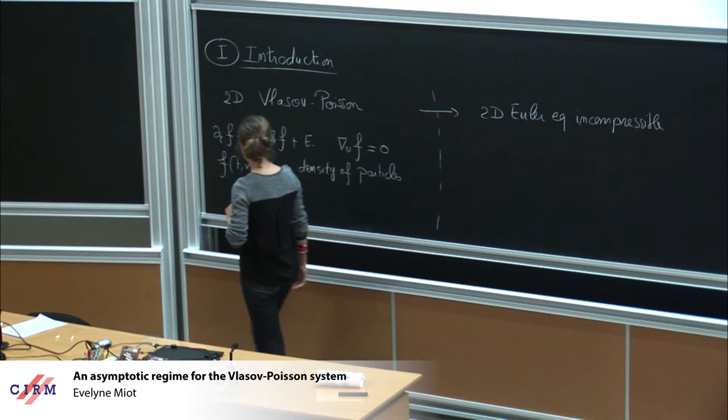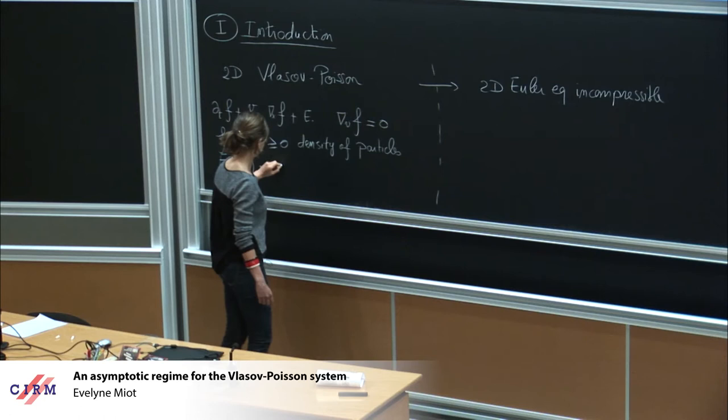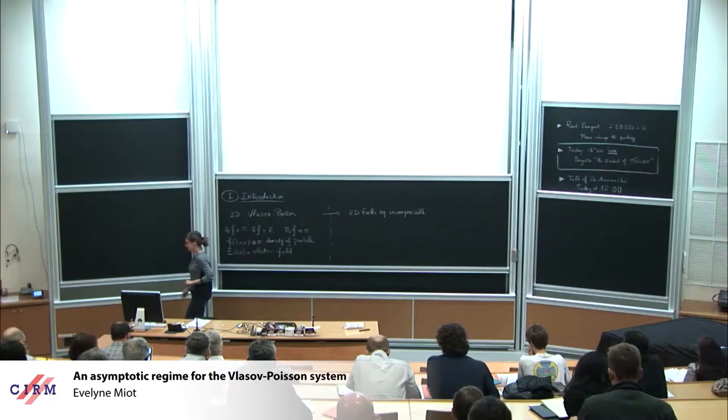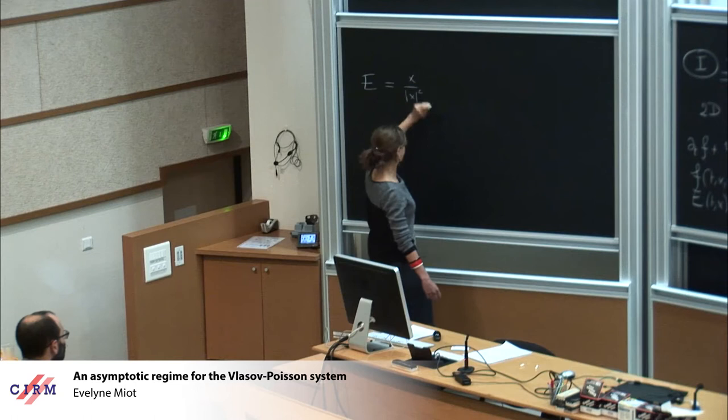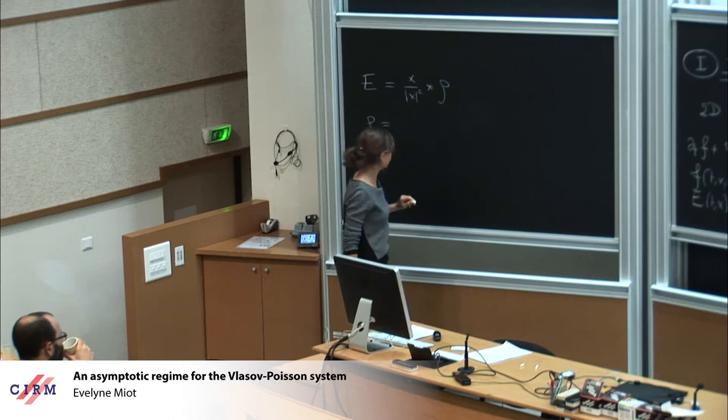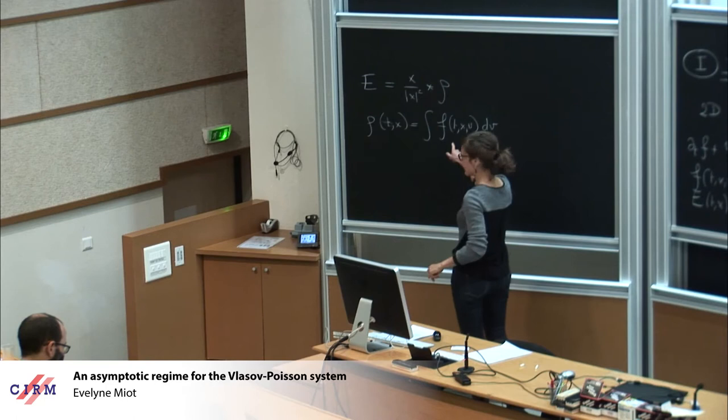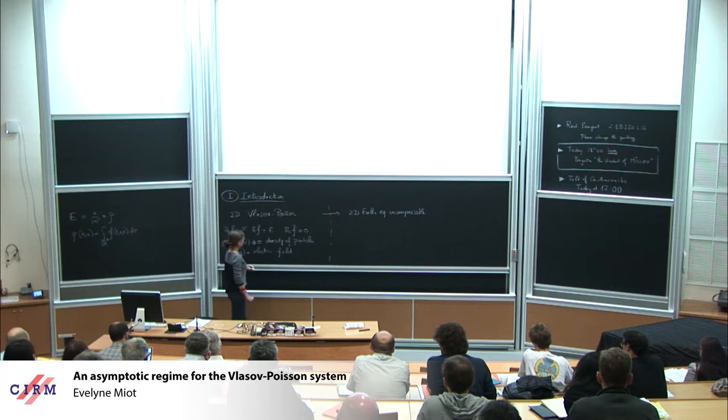E denotes the electric field. More precisely, E is defined to be the electric field generated by the power of the particles, the convolution of the kernel x over x squared with a function rho, where rho is a macroscopic density. So rho is a function depending only on t and x, which is defined to be the average over the velocities of the density f. I integrate on R2 because I deal with a two-dimensional case. So E is an electric field generated by the particles.